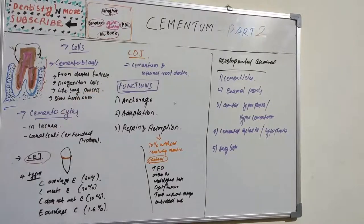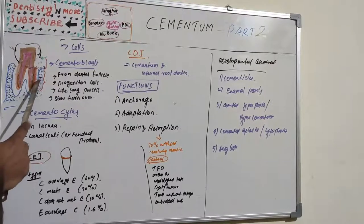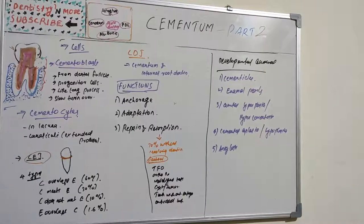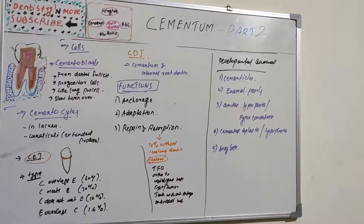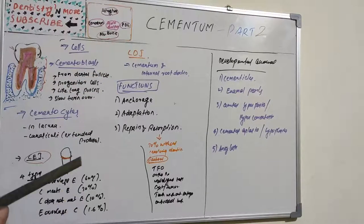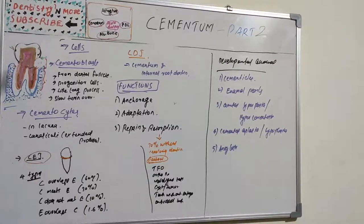The cemento-dentinal junction (CDJ) is the terminal apical area of cementum where it joins the internal root dentine. The nature of the CDJ is of particular clinical importance because it forms an interface between two very different mineralized tissues — cementum and dentine — and is involved in maintaining tooth function and repairing a diseased root surface. It measures two to three micrometers.